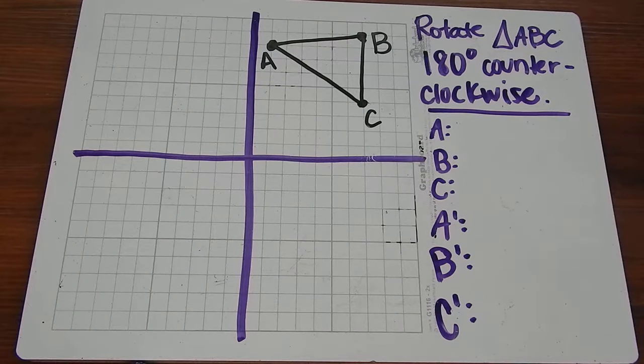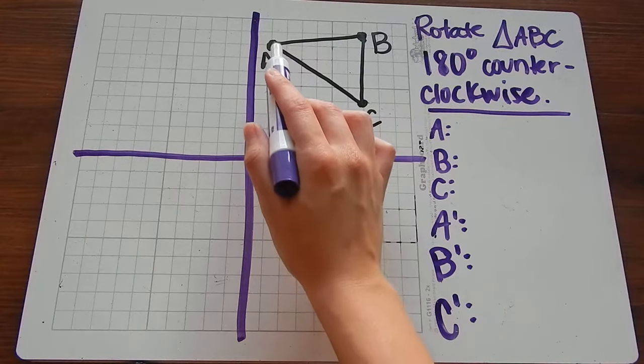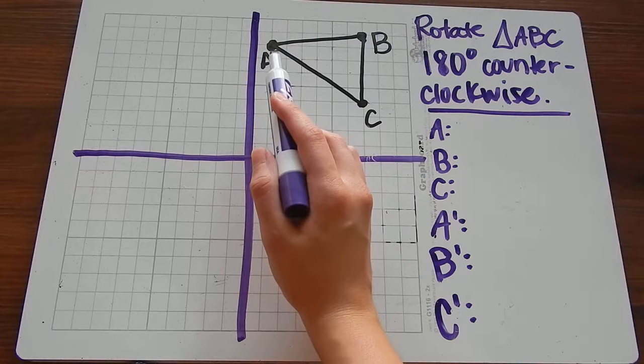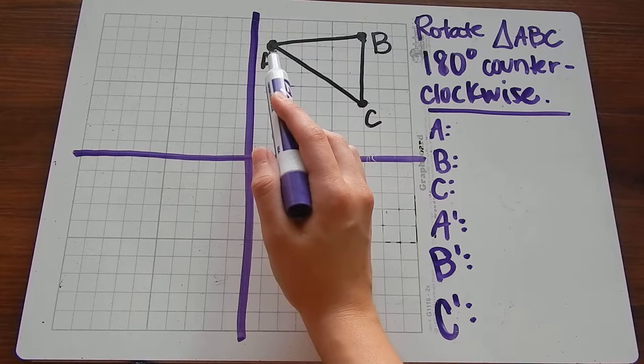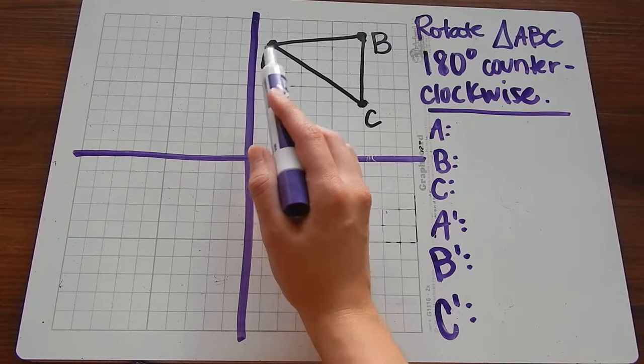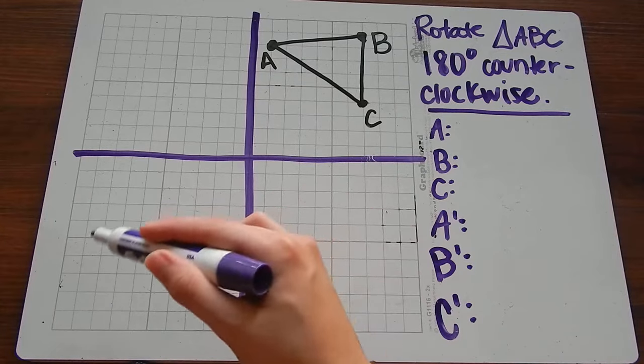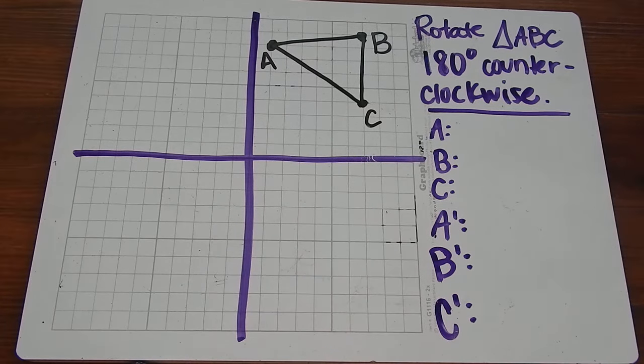Our first example is to rotate triangle ABC 180 degrees counterclockwise. So 180 degrees counterclockwise would be this way. If we're going 180 degrees, that means we need to move two quadrants because each quadrant is 90 degrees. So our new triangle is going to be here, two quadrants over. So if we don't get points in this quadrant, we know we did something wrong.